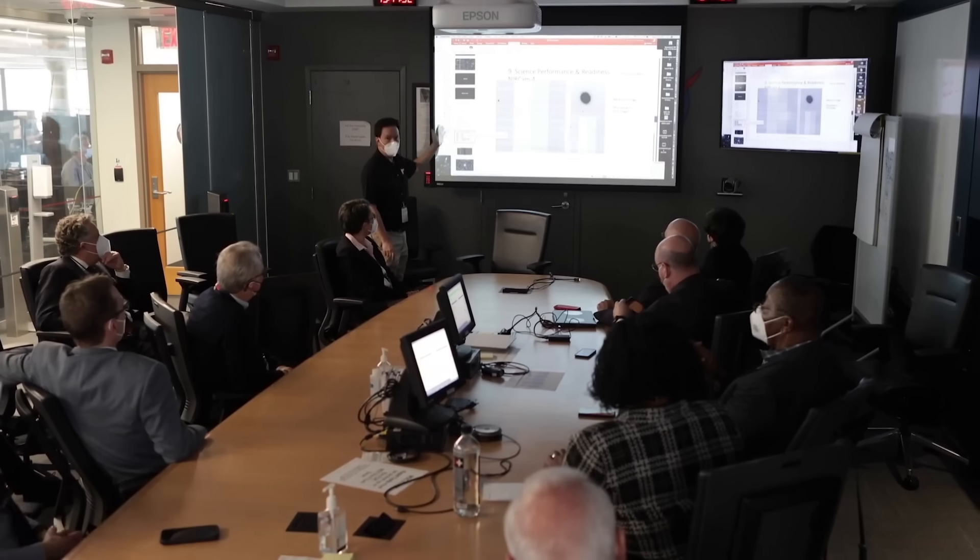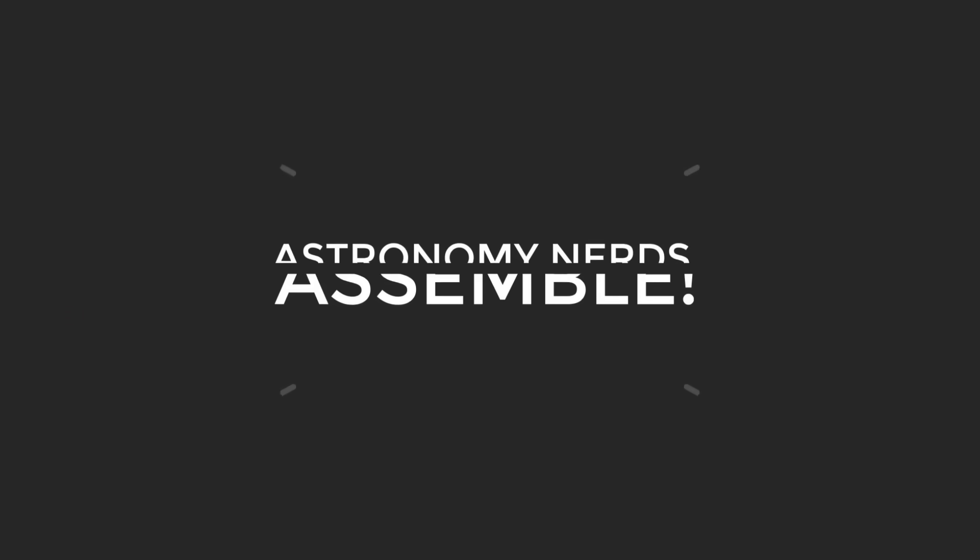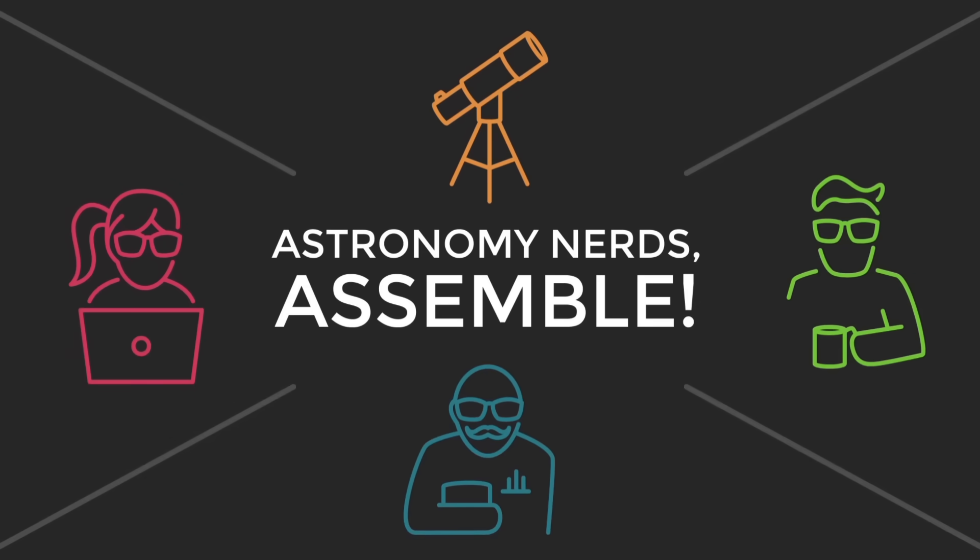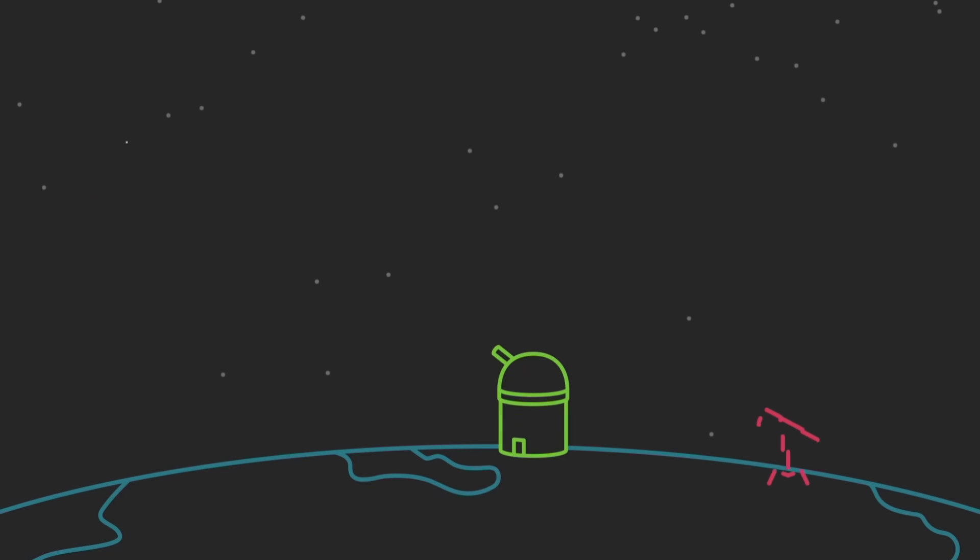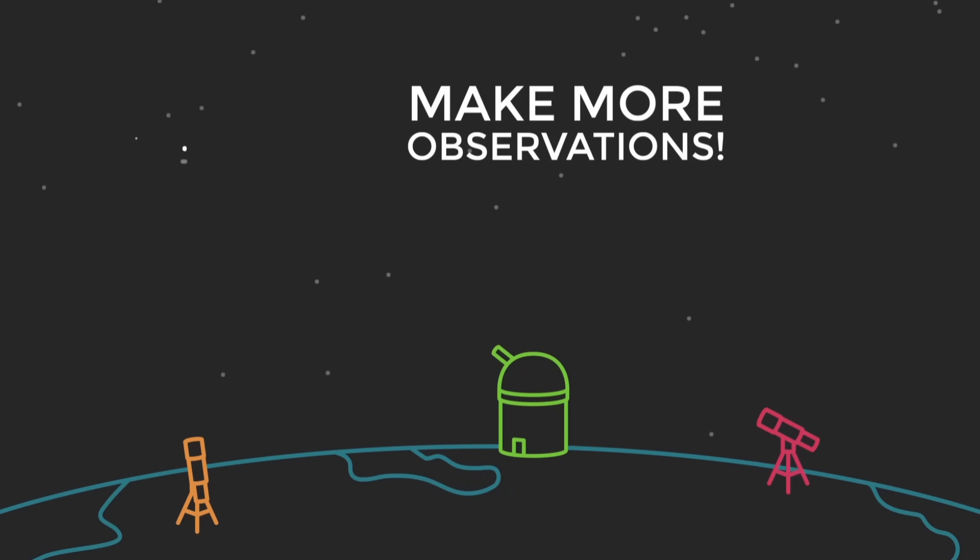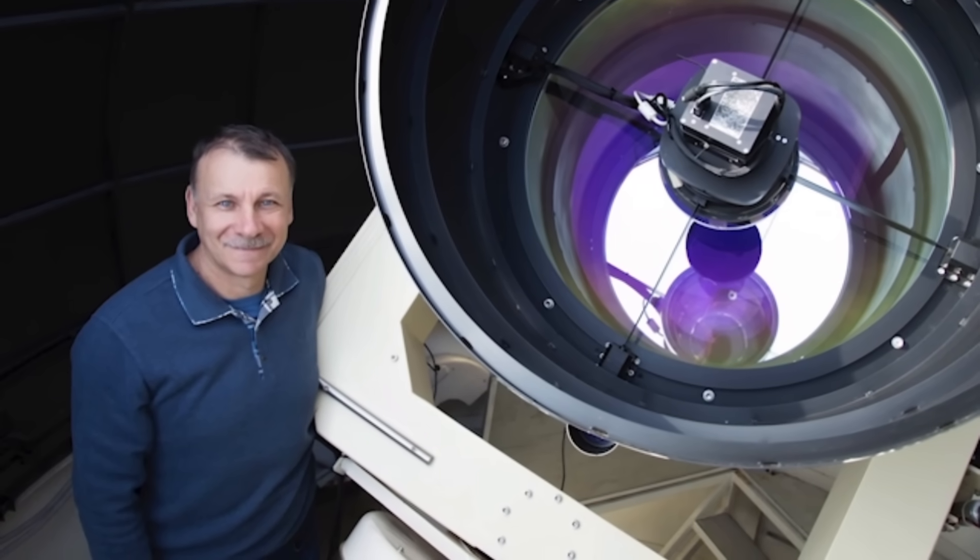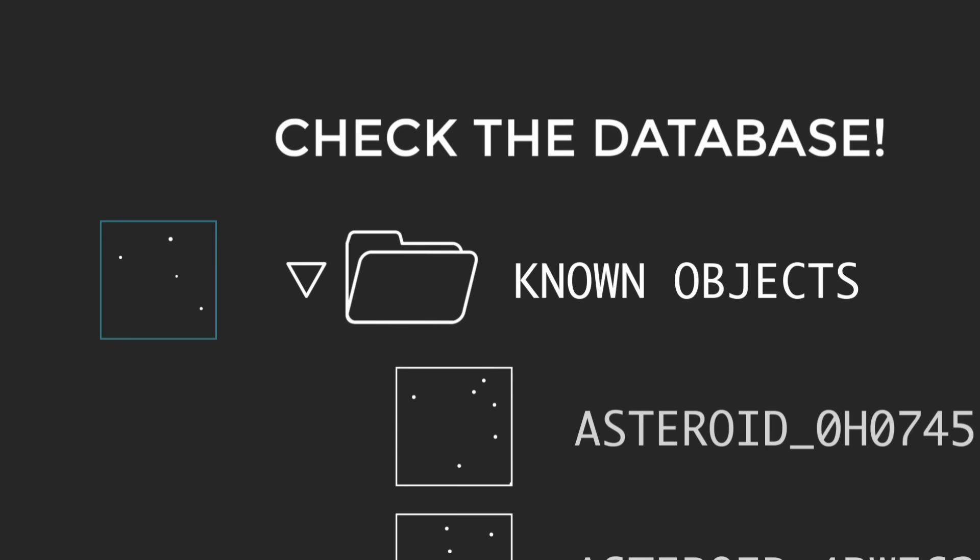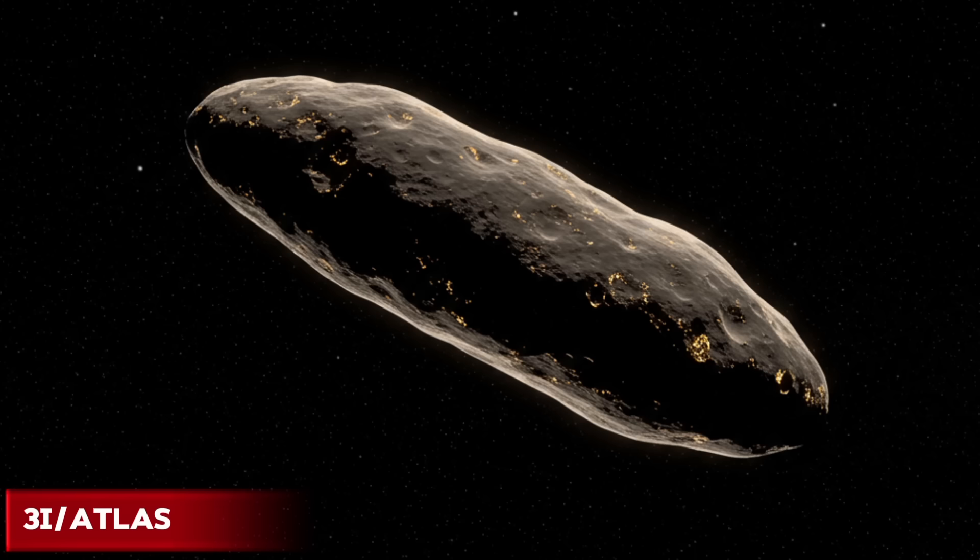By Wednesday evening, the Minor Planet Center, the group that keeps track of space objects, had received over 100 confirmed sightings from telescopes all around the world. Some astronomers even reported that the object might be a comet. With all this new information, the Minor Planet Center gave it an official name, 3i-slash-Atlas, making it only the third interstellar object ever recorded.